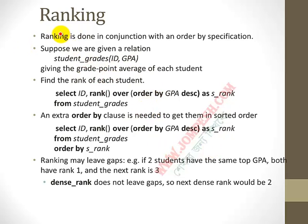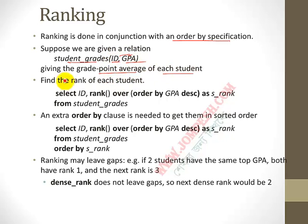Ranking is done in combination with an ORDER BY specification. Given a relation student_grade with ID and GPA, we will rank students where higher GPA gives a higher rank. We want to find the rank of each student. The query uses: select ID, rank() over (order by GPA desc) as s_rank from student_grade.